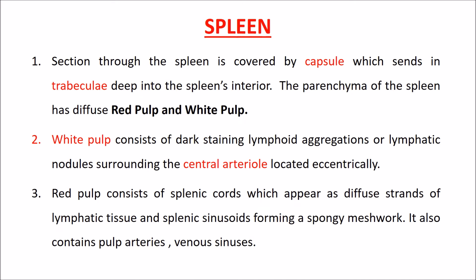Red pulp consists of splenic cords, which appear as diffuse strands of lymphatic tissue, and splenic sinusoids forming a spongy network. It also contains pulp arteries and venous sinuses.